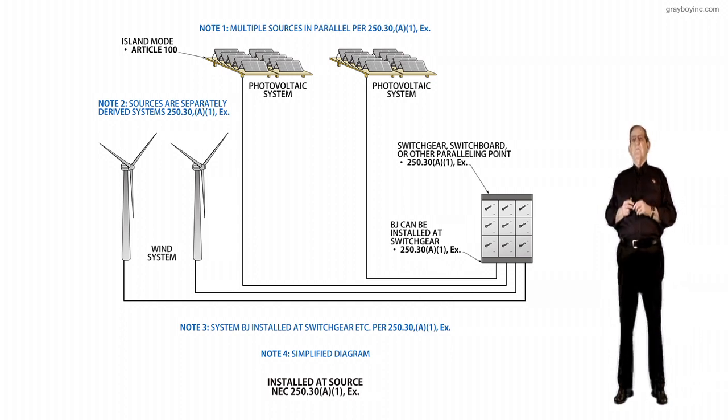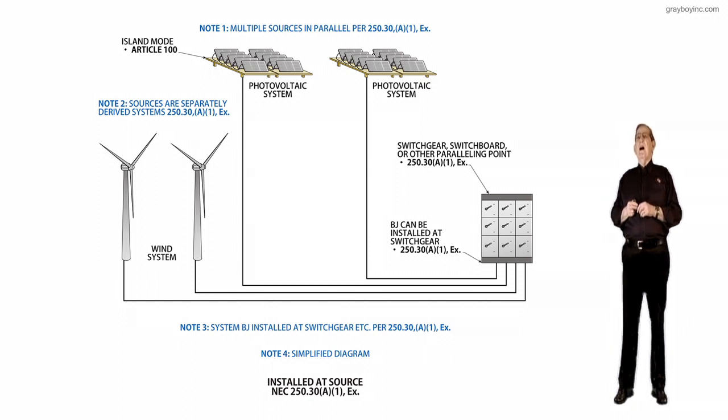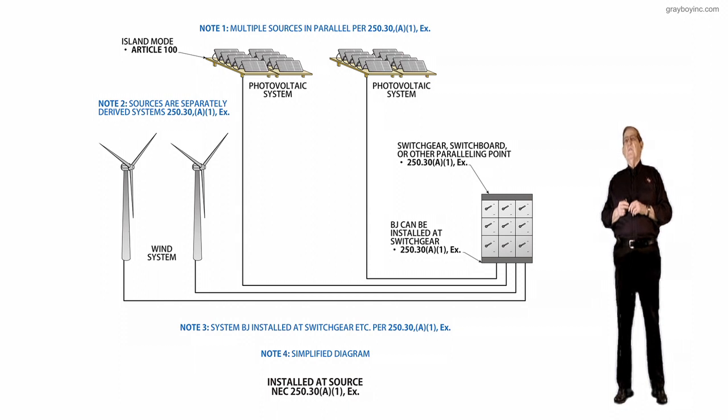That's the only place you pick up these secondary ties that you might have. And then note one, multiple sources in parallel, that's fine, but it's telling you where you can place the bonding jumper to prevent nuisance tripping and signaling and noise. 250.30A1 exception.